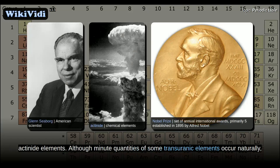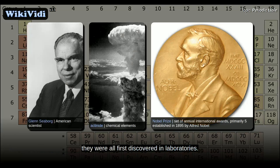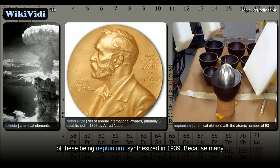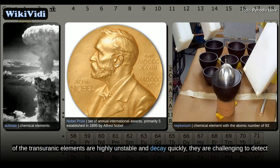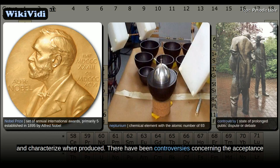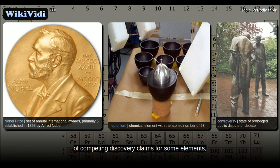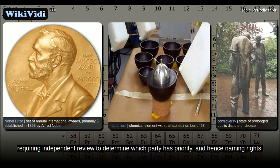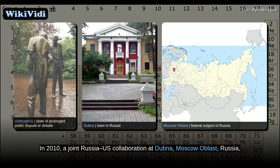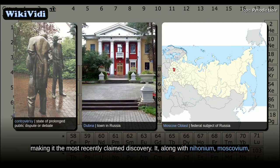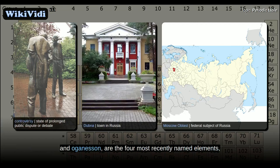Although minute quantities of some transuranic elements occur naturally, they were all first discovered in laboratories. Their production has expanded the periodic table significantly, the first being neptunium, synthesized in 1939. Because many transuranic elements are highly unstable and decay quickly, they are challenging to detect and characterize. There have been controversies concerning competing discovery claims for some elements, requiring independent review to determine naming rights. In 2010, a joint Russia–U.S. collaboration at Dubna, Russia, claimed to have synthesized six atoms of tennessine, making it the most recently claimed discovery. It, along with nihonium, moscovium, and oganesson, are the four most recently named elements, whose names all became official on 28 November 2016.